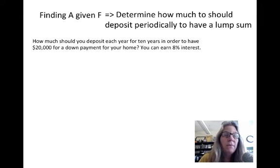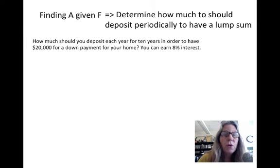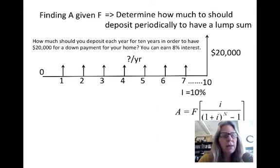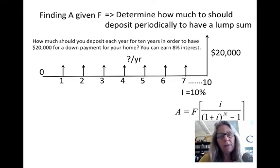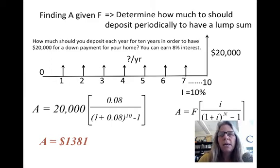This equation finds A given a future value F, to determine how much you should deposit periodically to receive a lump sum. How much should you deposit each year for 10 years to have $20,000 for a down payment on a home, earning 8% interest? Using the equation A equals F times the factor, plugging in at 8% gives $1,381 per year.